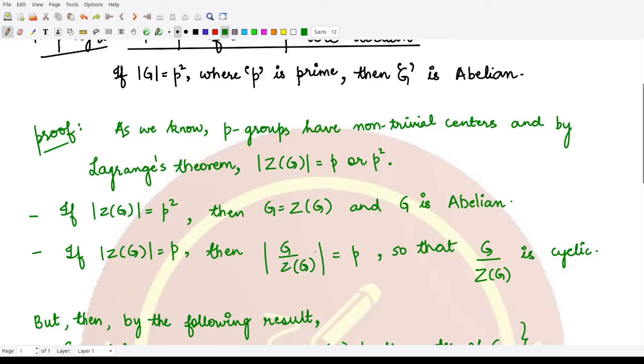Because the order of the group G was p² and the order of Z(G) was p, so when you divide you have p here as the answer. So this is p, and that means whatever is this group, if its order is prime then...